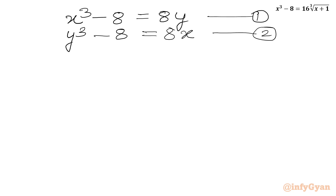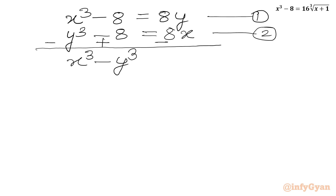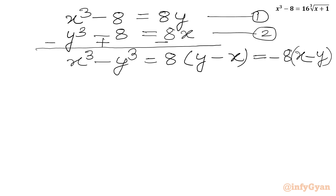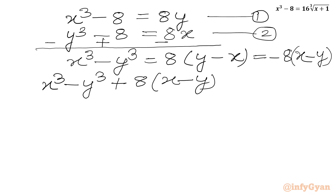We perform operation 1 minus 2. We will get x³ - y³, the -8 and +8 cancel, equal to 8y - 8x, which equals -8(x - y) after taking -1 common from the bracket. Bringing all terms to the LHS gives x³ - y³ + 8(x - y) = 0.